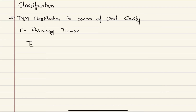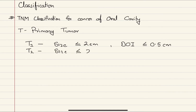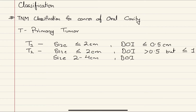T1 is when the size of the tumor is less than or equal to 2 cm and the depth of invasion is less than or equal to 0.5 cm. T2 is when the size is less than or equal to 2 cm but the depth of invasion is more than 0.5 cm but less than or equal to 1 cm, or when the size is more than 2 cm and less than 4 cm with depth of invasion less than or equal to 1 cm.